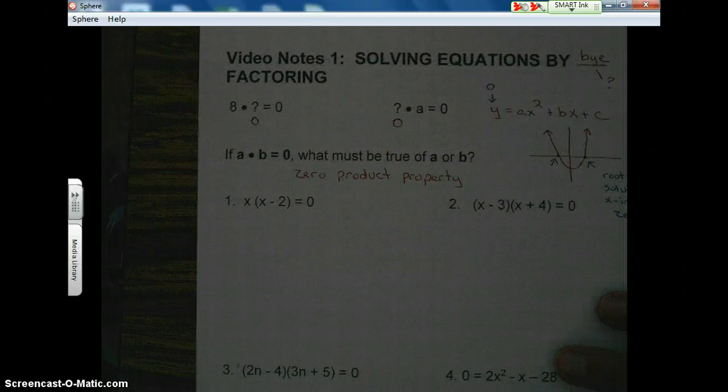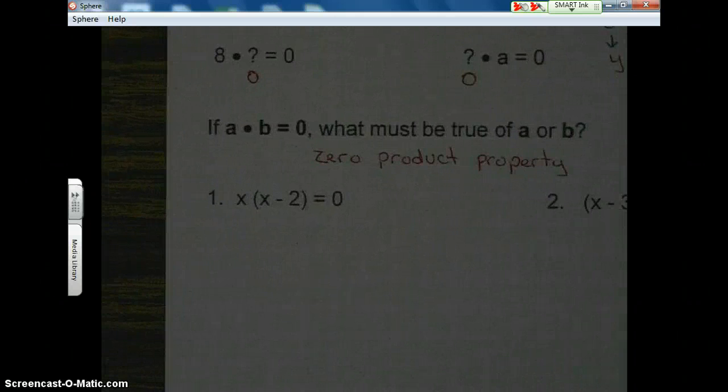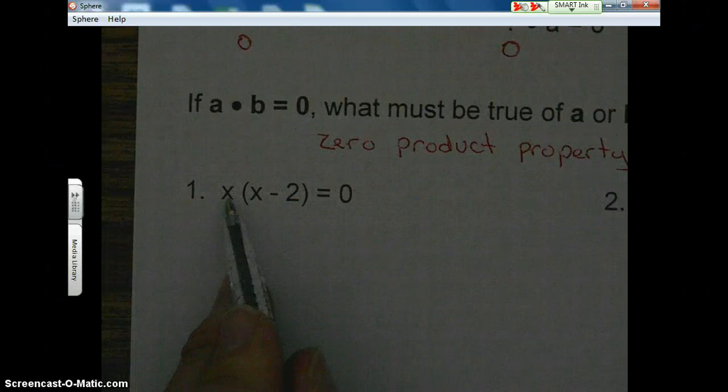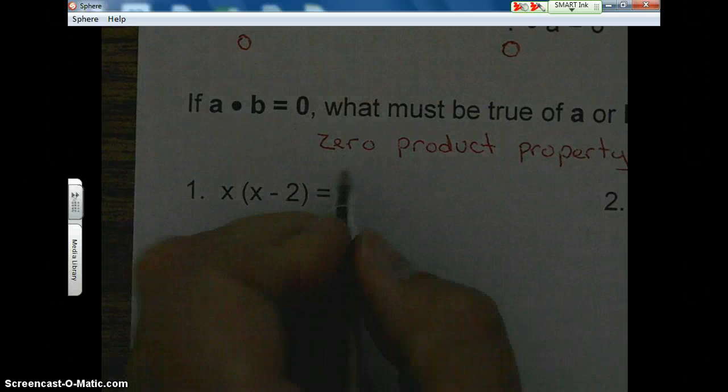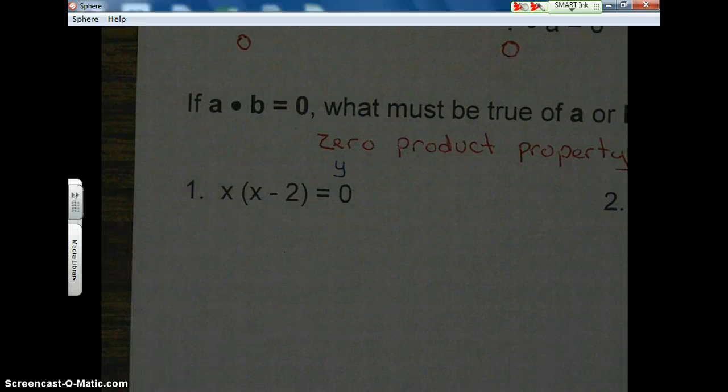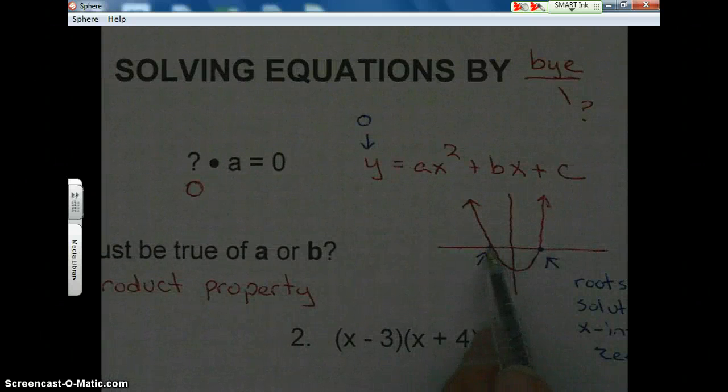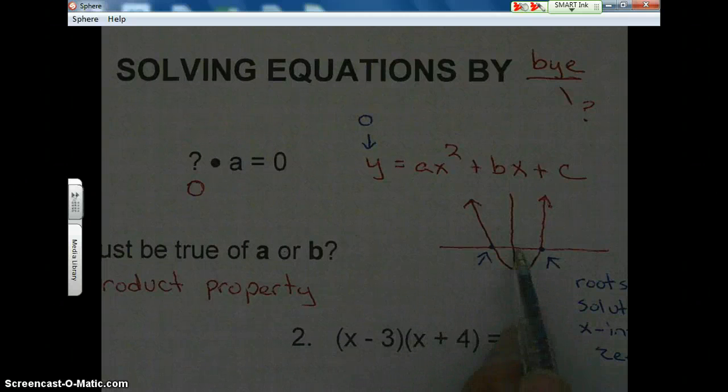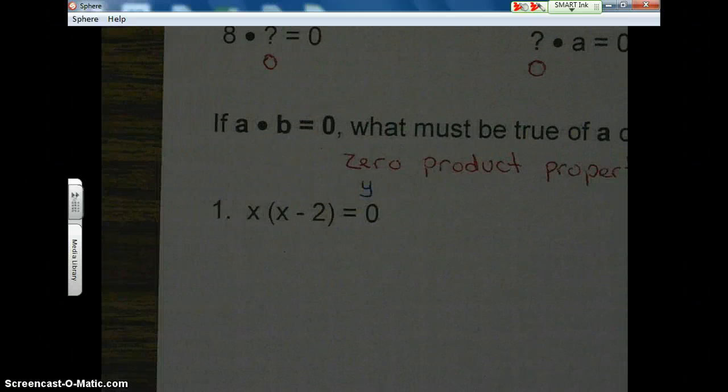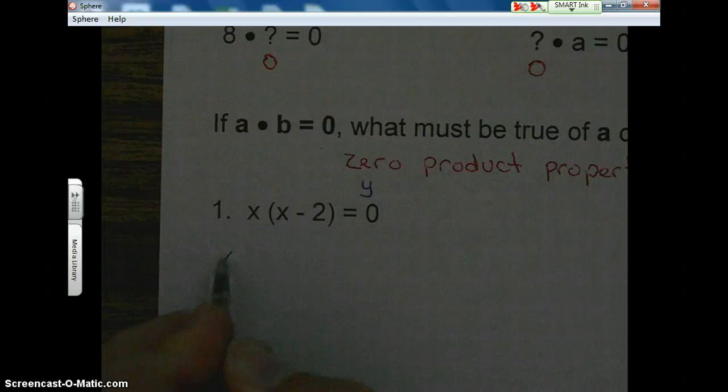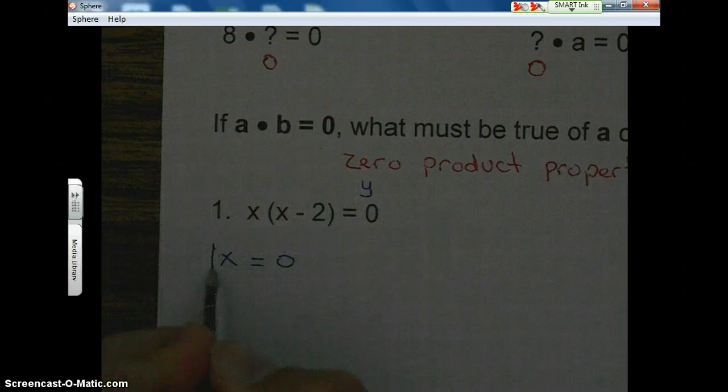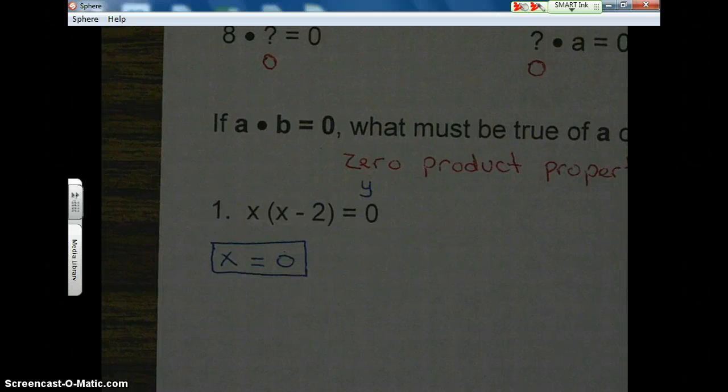let's take a look at number one. Notice that we have two factors, and it's equal to zero. Remember, this is our y value. In order to find the solutions, the equation must be set equal to zero because the solutions are located on the x-axis, and the y value of both of these is zero. So, using the zero product property, we're going to take the first factor, which is x, and set it equal to zero. Ah! Easy!